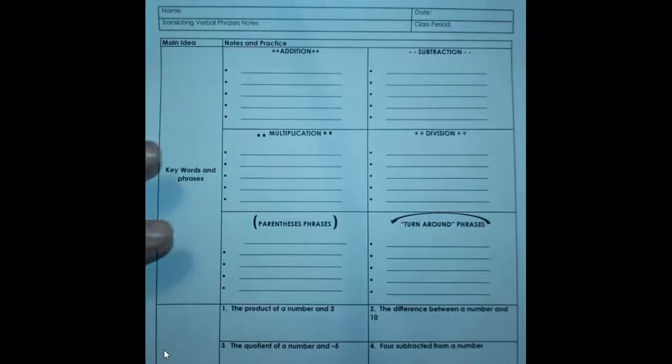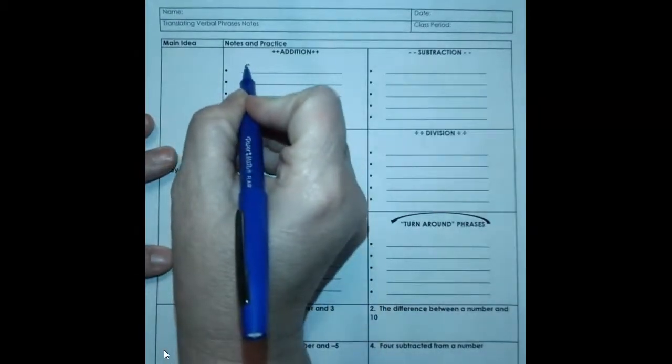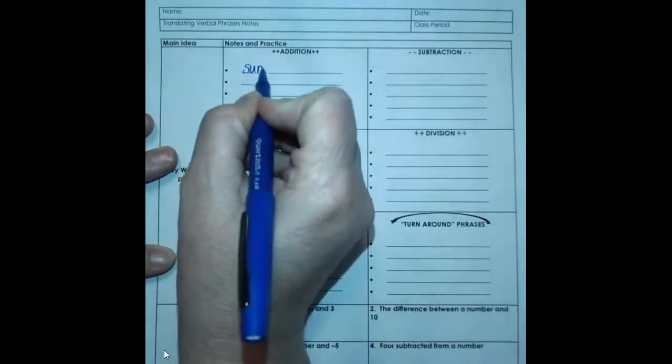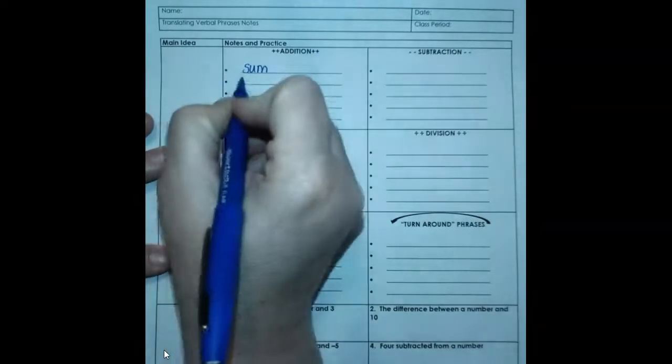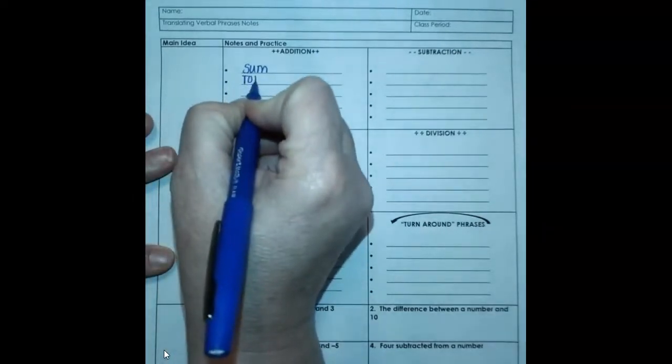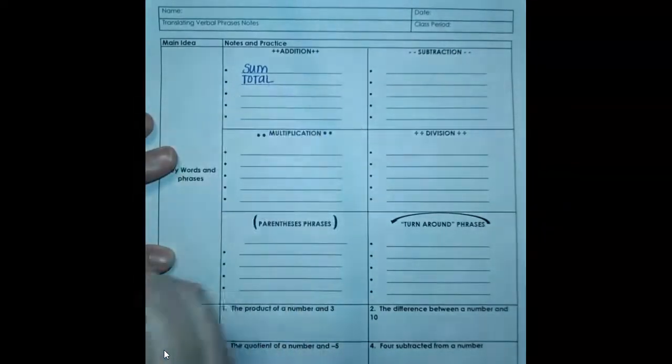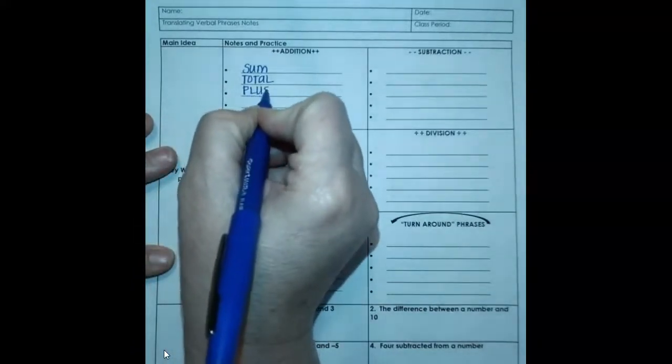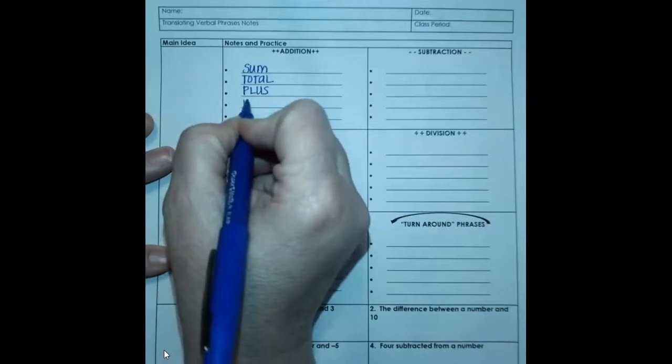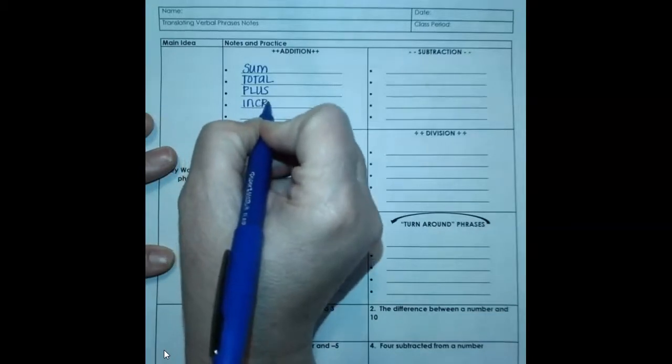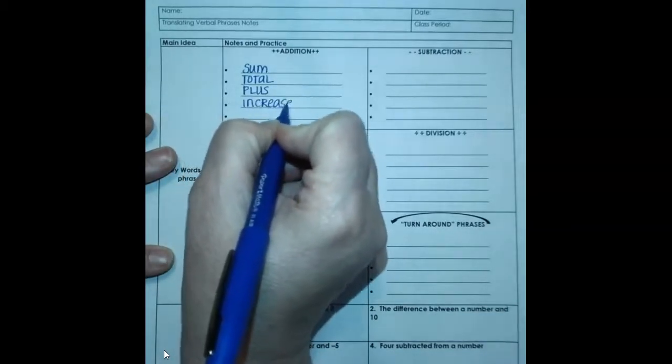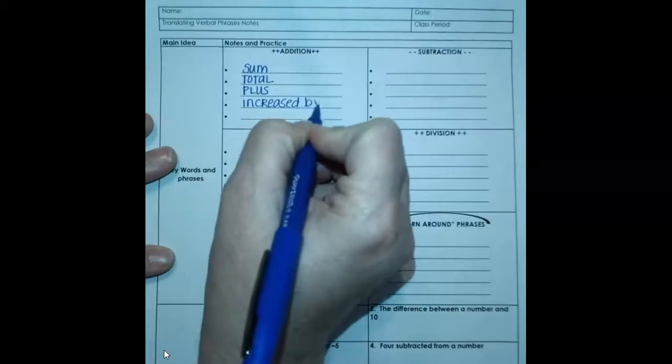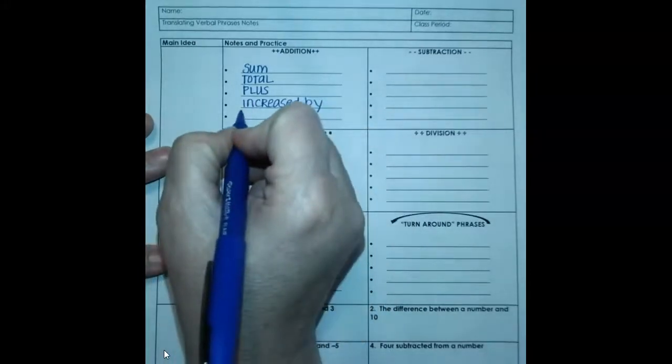For addition, we've had this come up several times already, sum. That means add them together. Total is another one that means add these two together. Plus, increased by, and then more than.